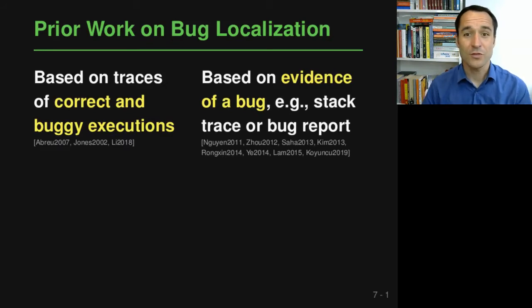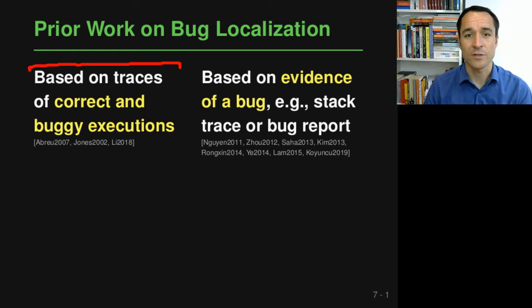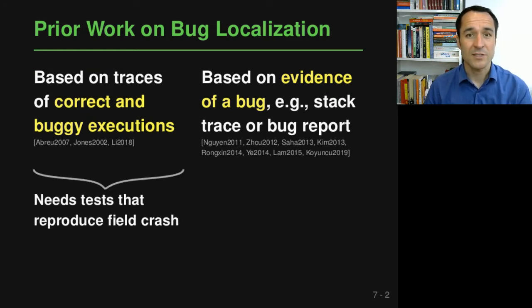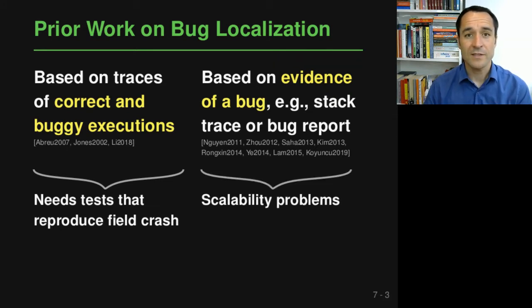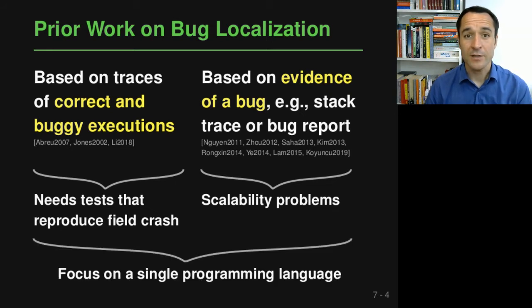Of course, we are not the first to look into the problem of bug localization, and there are two interesting streams of work that have inspired our work. One is based on traces of correct and buggy executions, which is great if you have these traces, but does not really work in our case because we do not have tests that reproduce the field crashes. On the other hand, there's work that also considers some evidence of a bug — for example, a stack trace or a bug report — similar to our crash traces, but we found that all of these existing approaches have some kind of scalability problem, for example because they assume that you can statically analyze all the code in your code base. Also, practically all existing work focuses on a single programming language, but we would like an approach that works across different languages.